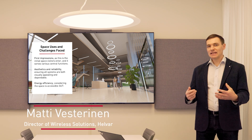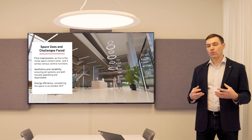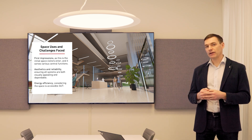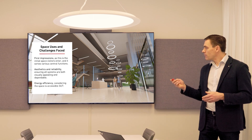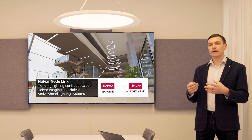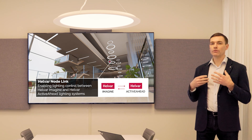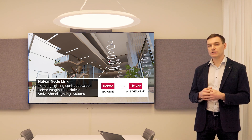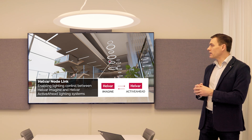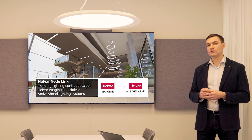That's why there need to be scenes that are automated through scheduling, as well as some manual overrides when certain events are happening in this area. That's why we have selected to use the Helvar Imagine solution for the atrium area. But not just the atrium — there are also corridors and staircases beside it, where we have selected the wireless Helvar Activate solution due to its easy installability and setup. With the Node Link, we can control all of these areas from the Helvar Imagine solution.